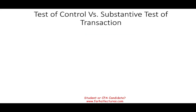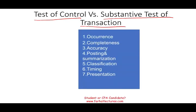Hello and welcome to this session in which we look at a bunch of audit procedures and determine whether they are a test of control or a substantive test of transaction, and how they relate to audit-related objectives. You need to know: occurrence, completeness, accuracy, posting and summarization.